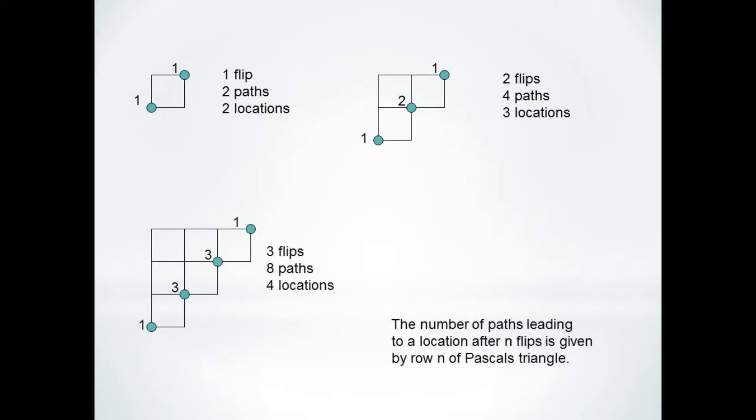If he flips the coin three times, you'll see the possible paths are 1, 3, 3, 1, and we are getting exactly the values from Pascal's triangle.